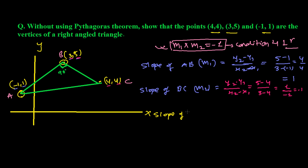Now let's find the slope of AC, call it m3. Difference of y-coordinates: 4 - 1 = 3. Difference of x-coordinates: 4 - (-1) = 5. So m3 = 3/5.